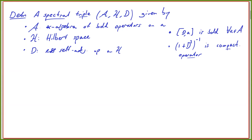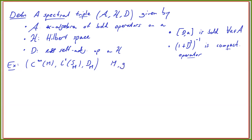Let's give an example. The first one I already told you, but it's good to keep it in mind because it's the motivating example: C∞(M), L2 of the spinor bundle, and the Dirac operator D_M on a Riemannian spin-C manifold (M, g).